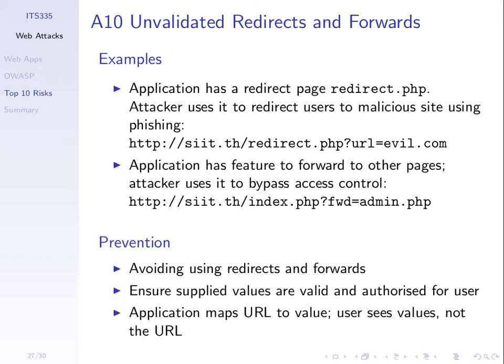In the complete URL we would not see 'URL equals evil.com' — we would see 'destination equals some hash of the domain', some unique mapping. The application then converts that value back to the actual domain. That would be much harder for the attacker to construct their own URL pointing to their own website. The simplest solution is not to use these features.